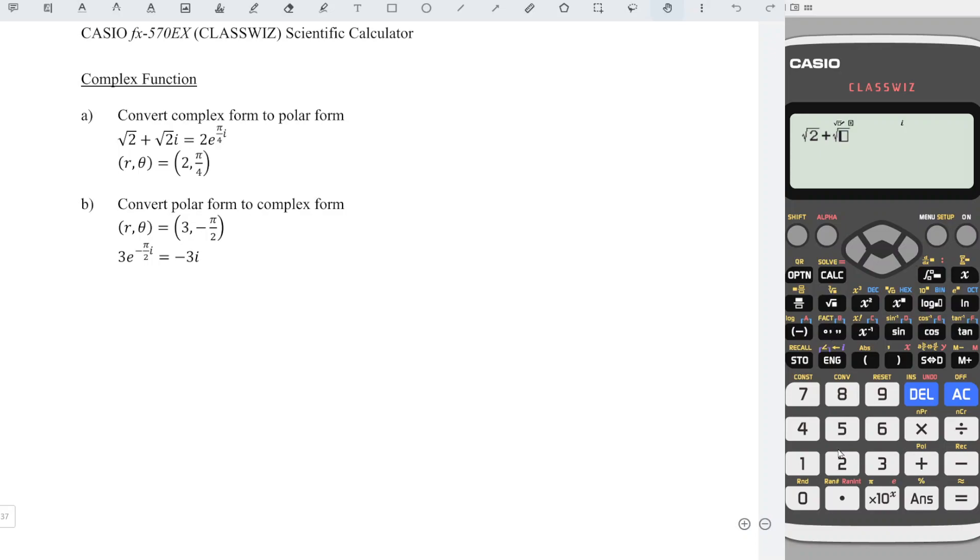To get i, just have to press the ENG button. Next, press option, press down until we see the polar form which is number one, and we press equal. The first value is the value of r and the second value is the angle which is in terms of degree.